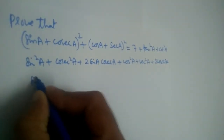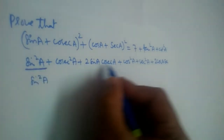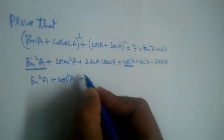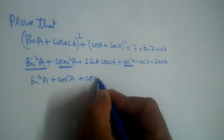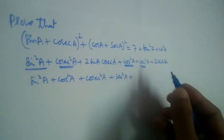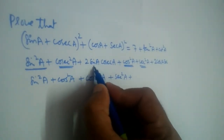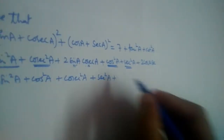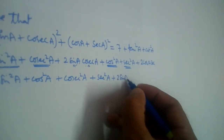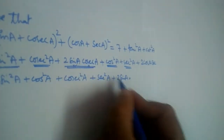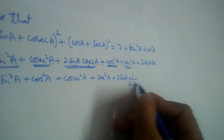Now let us rearrange these terms. We have sin²a and cos²a, then cosec²a and sec²a. Notice that sin and cosec are reciprocal functions — cosec a = 1/sin a. So the 2·sin a·cosec a term simplifies: sin and sin cancel, leaving 2.